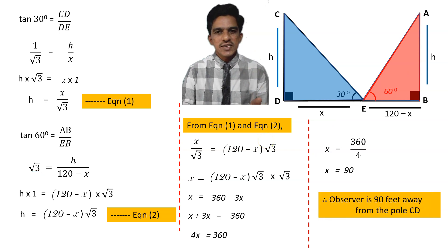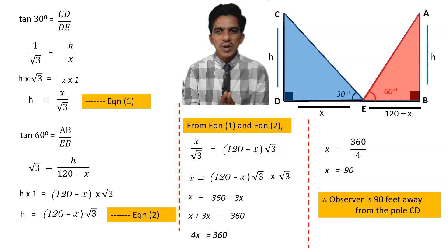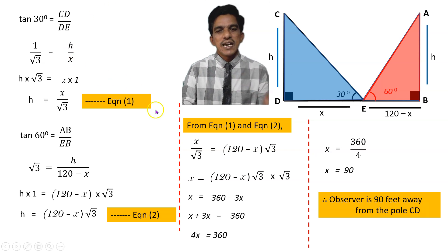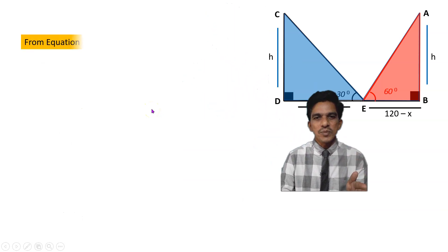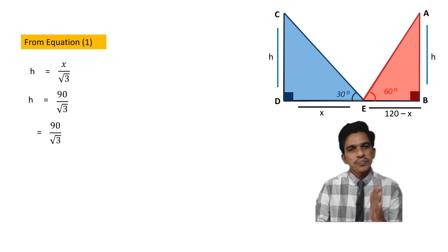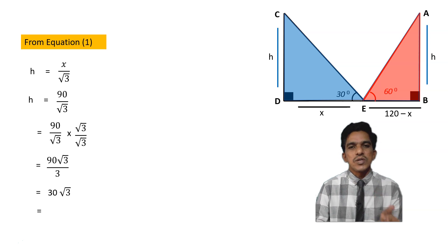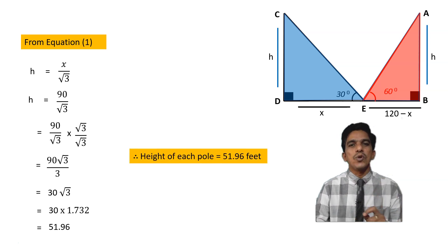So we can say that the observer is 90 feet away from the pole CD. If it is 90 feet away, automatically pole AB is 30 feet distant. Now we have to find the height of the tower. From equation 1, H equals X by root 3, that means H equals 90 by root 3. Rationalizing, 90 root 3 by 3 equals 30 root 3. We know that root 3 is 1.732, so this equals 30 into 1.732, which is 51.96. Therefore, height of each pole is actually 51.96 feet.